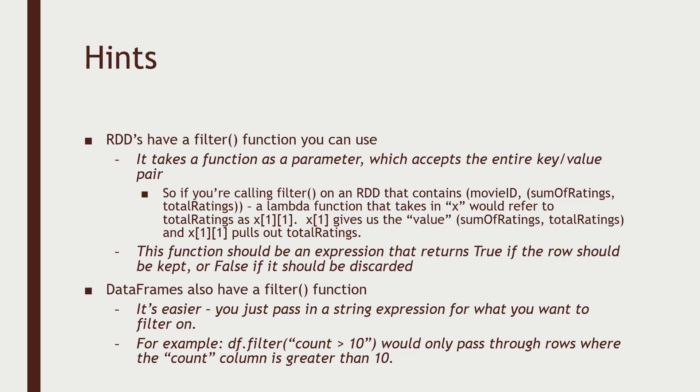So remember, RDDs have a filter function you can use, and all you do is pass in some sort of function that will determine whether or not a row gets retained, so it needs to be some Boolean expression that returns true if the row should be kept or false if it should be discarded. If you read through this little example here, it pretty much gives you the answer of how to do this. If you're not quite comfortable with scripting or Python yet, you might want to read that closely because it's going to give you some pretty strong guidance.